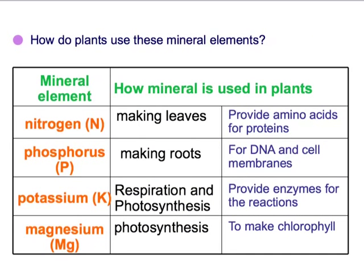Plants use all the different mineral elements for different things. Nitrogen is used in making leaves, because nitrogen reacts with glucose to make amino acids, which can then be formed into proteins. Phosphorus is used for making the roots, as it is needed in the DNA and the cell membrane.